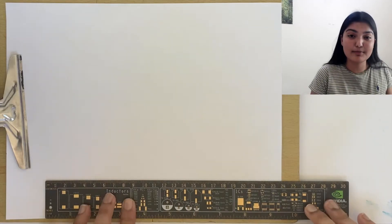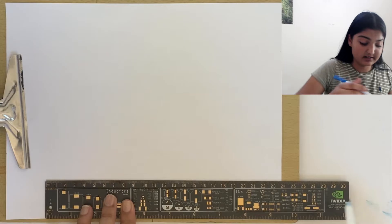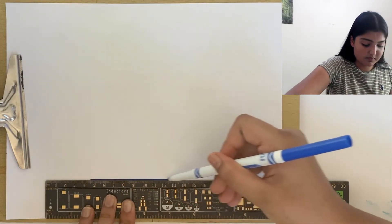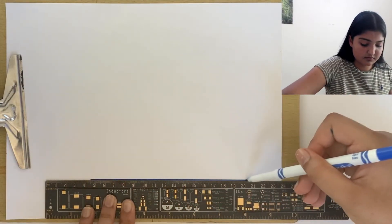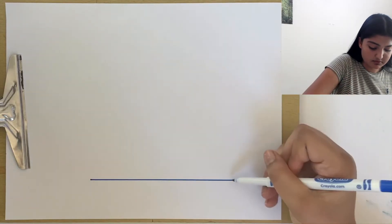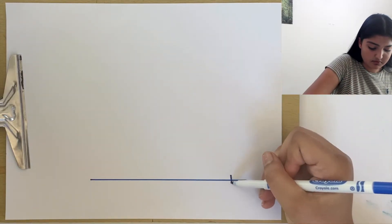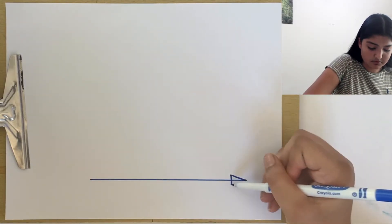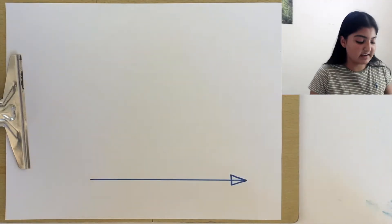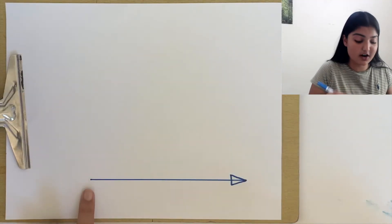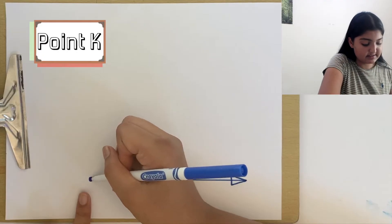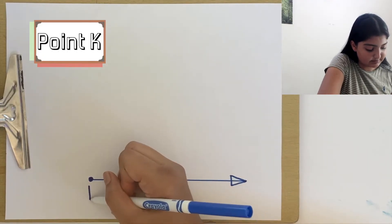I can start by making a horizontal ray. Let's make a point at the start of our ray and label it as K.